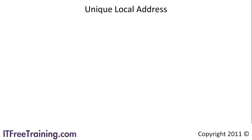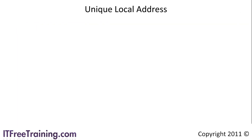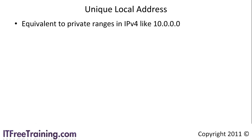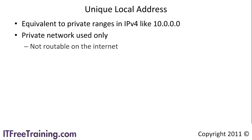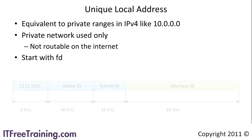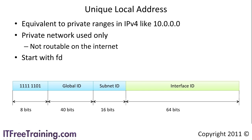The last type of IP version 6 address is the unique local address. These addresses are equivalent to the private address ranges in IP version 4. These addresses are for private network use only and thus not routable on the internet. All unique local addresses start with FD, so they are easy to identify. The address scheme gives you 40 bits to define your network and 16 bits to define your subnets. Each private address gives you 64 bits of client address, which is more than enough for any network. Using the global ID and subnet ID, you are free to divide your network up into a simple and logical network.